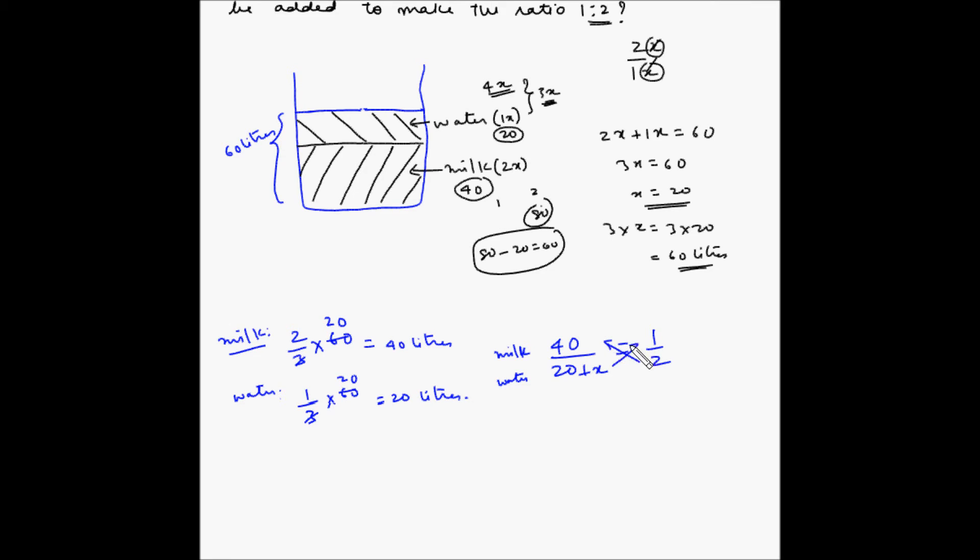So, here we can cross multiply. 40 multiplied by 2 is 80 is equal to 20 plus x or x is equal to, so 20 we will take here. This is positive it becomes negative. So, 80 minus 20 which is equal to 60 liters.